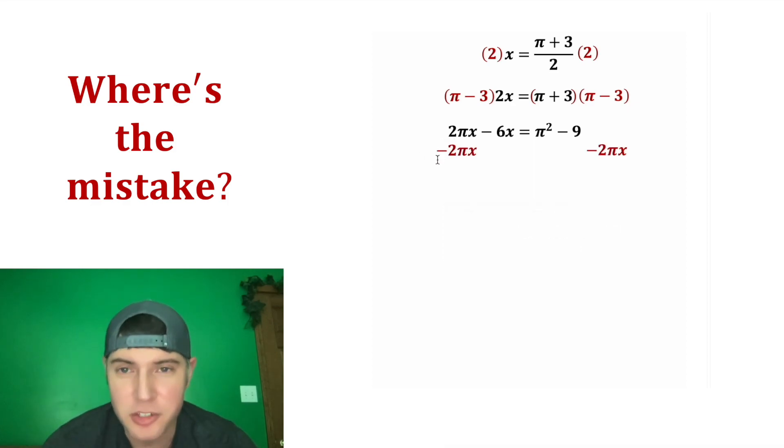Next let's subtract this 2 pi x from both sides and let's add 9 to both sides. On the left hand side these cancel so we're just left with 9 minus 6x. And on the right hand side these cancel, so we're left with pi squared minus 2 pi x.